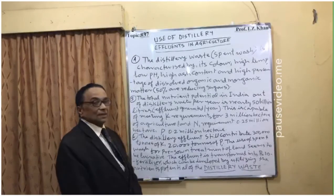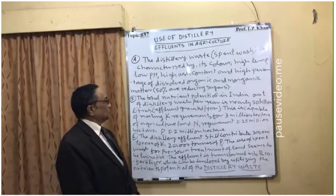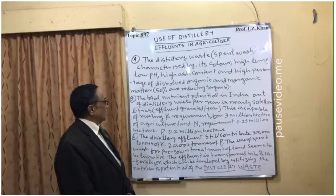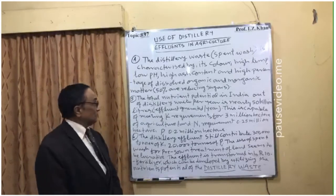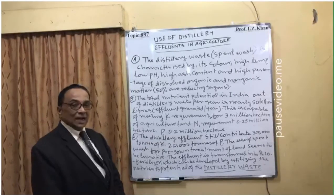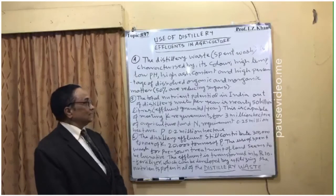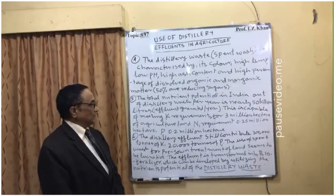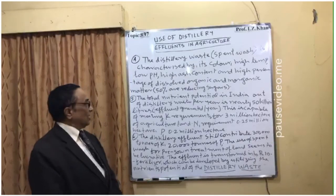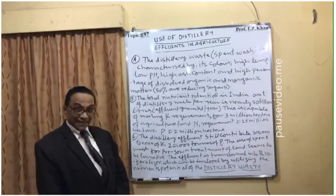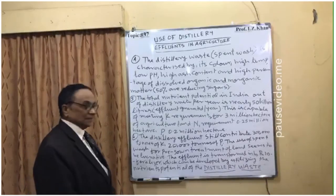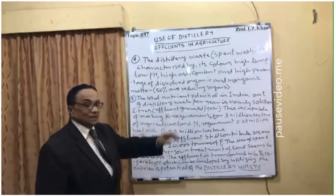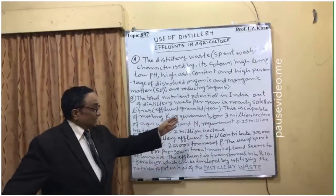Point five: the total nutrient potential from distillery waste in India is nearly 50 billion liters of effluent generated per year. This is capable of meeting the potassium requirement for 3 million hectares of agricultural land, the nitrogen requirement for 0.25 million hectares, and the phosphorus requirement for 0.2 million hectares. So from this 50 billion liters of distillery waste, we can cover millions of hectares of land by supplying phosphorus, potassium, and nitrogen.